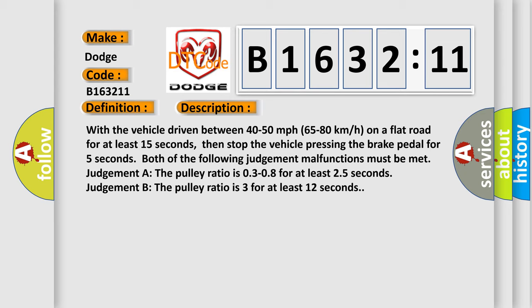And now this is a short description of this DTC code. With the vehicle driven between 40 to 50 miles per hour (65 to 80 kilometers per hour) on a flat road for at least 15 seconds, then stop the vehicle pressing the brake pedal for 5 seconds. Both of the following judgment malfunctions must be met. Judgment A: The pulley ratio is 0.3-0.8 for at least 2.5 seconds. Judgment B: The pulley ratio is 3 for at least 12 seconds.